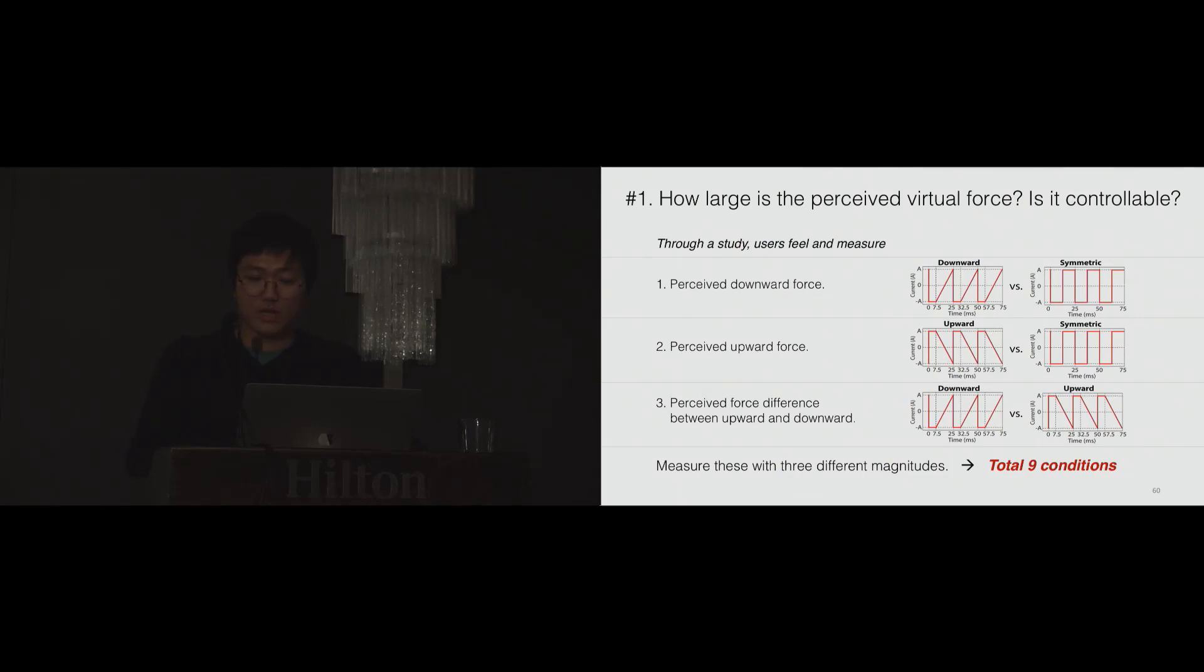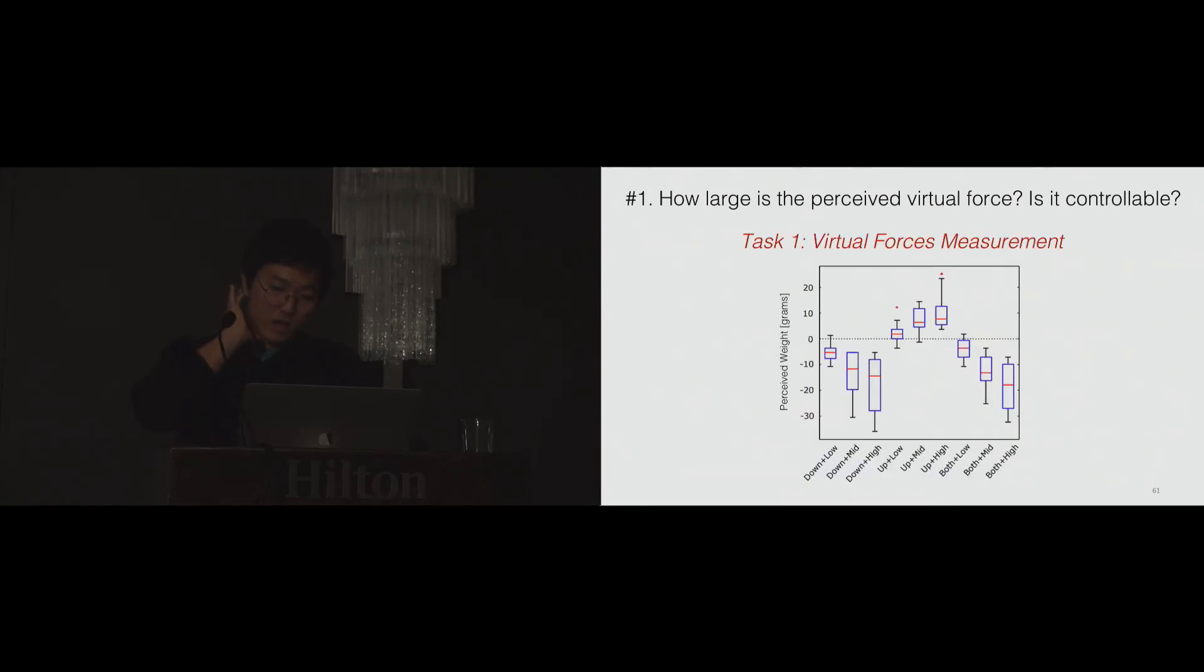We measured three types of virtual forces: downward forces, upward forces, and the force with difference between upward and downward. We measured with three different magnitudes of current, so there were total nine conditions. And this is the result. We found that the device can generate downward force up to 15 grams and upward force up to 8 grams. The device also can generate various amounts of virtual forces by controlling the magnitude of current. However, the results have huge variance depending on users.